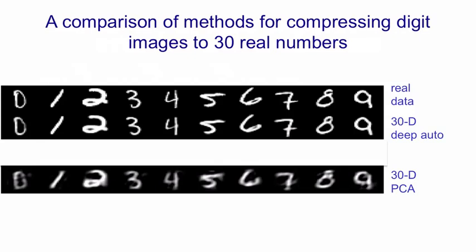If you compare that with linear principal components analysis, you can see it's much better. A linear mapping to 30 real numbers cannot do nearly as good a job of representing the data.